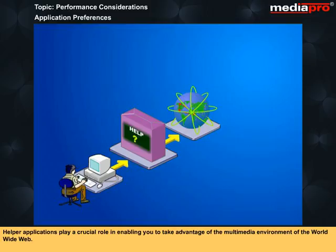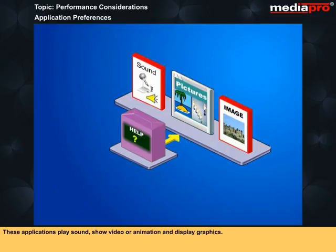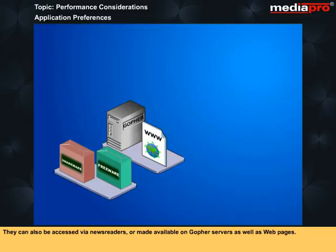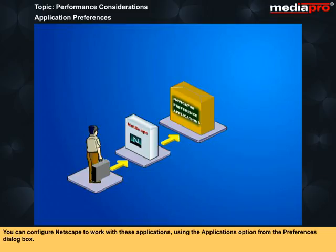Helper applications play a crucial role in enabling you to take advantage of the multimedia environment of the World Wide Web. These applications play sound, show video or animation, and display graphics. Many such applications are available as freeware or shareware and can be downloaded from FTP sites. They can also be accessed via news readers or made available on Gopher servers as well as web pages. You can configure Netscape to work with these applications using the applications options from the Preferences dialog box.